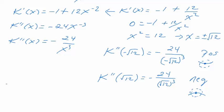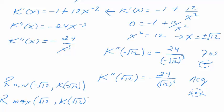So we end up with a relative min at negative square root of 12. And then k of, we'll plug negative square root of 12 in there. And that'll be our relative minimum. And then our relative max will occur at square root of 12, comma k square root of 12. That'll be our relative max.